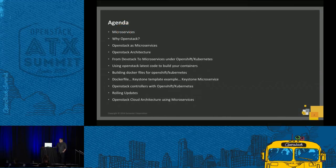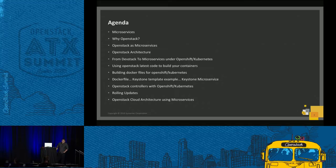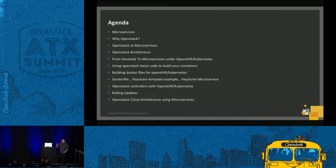First, we'll cover a definition of microservices, why OpenStack, how we move OpenStack into microservices, and we'll see the standard architecture of OpenStack. After that, we'll go through why it's better to do this with microservices instead of using DevStack for development. Then I'll show you how to build your containers using the latest code so you can test from source, master, or any release that you want.